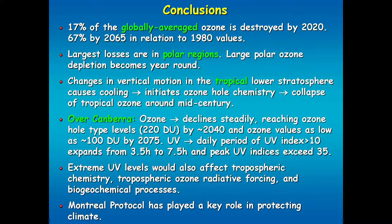Here are my conclusions. Without the Montreal Protocol, about 17% of globally averaged ozone would be destroyed by 2020, and 67% — two-thirds — gone by 2065 compared to 1980 values. The largest losses would have been in the polar regions, and the large polar ozone depletion that previously happened only in October and November would now be year-round. Changes in vertical motion in the tropics, driven by climate warming from these greenhouse-gas ODSs, would cause cooling of the lowest stratosphere in the tropics — and suddenly the chemistry that was only happening in the Antarctic ozone hole now happens in the tropics. That ozone just runs off a cliff.